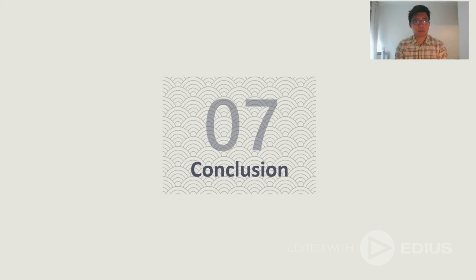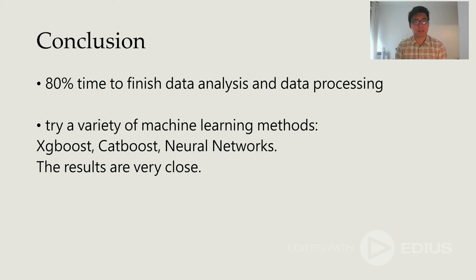In conclusion, we went through the whole process. We realized that data processing and data analysis are the most important for Kaggle challenge. Due to a huge amount of features in our dataset, we used 80% time to analyze data and do data processing. In our project, we tried several machine learning methods. For example, XGBoost, CATBoost and neural network. We find that the results are very close. In order to explain the methods in detail, we choose neural network we are most familiar with. We think that it's the best way to understand this project.